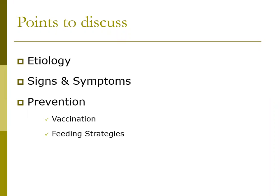Enterotoxemia is a frequently severe disease of sheep and goats of all ages. It is caused by two strains of bacteria called Clostridium perfringens — the strains are termed type C and type D. These bacteria are normally found in low numbers in the gastrointestinal tract of all sheep and goats.